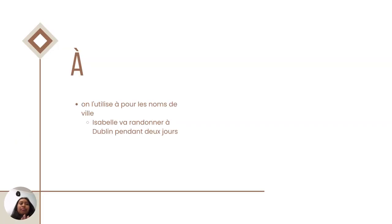And then I want to talk about À. We use À for the names of cities, like Blacksburg, Lynchburg, and Richmond. For example, Isabelle is going to travel to Dublin for two days.